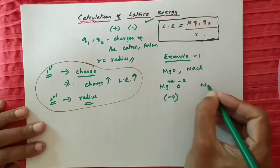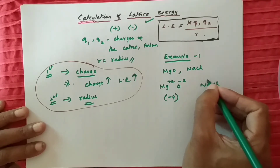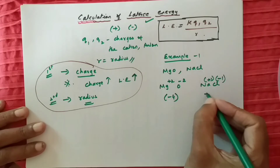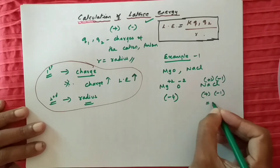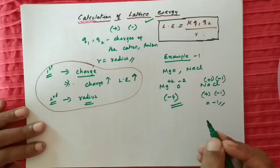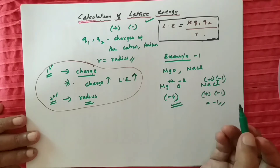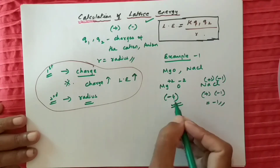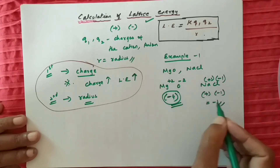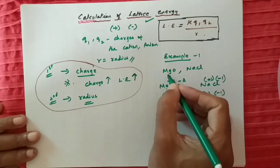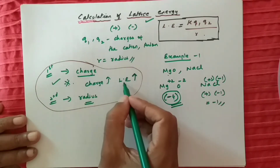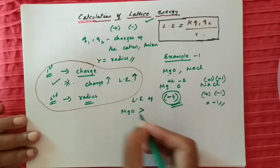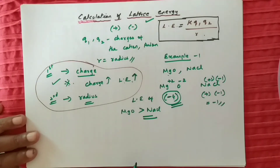In the second case, NaCl: sodium is Group 1, so it is +1, and chloride has a charge of −1. So the product of charges q1 × q2 = +1 × −1 = −1, with a magnitude of 1. Clearly MgO has a larger charge product of 4 compared to 1 for NaCl. Greater the charge, greater the lattice energy. So lattice energy of MgO is greater than NaCl.